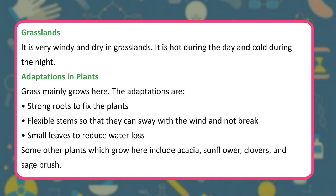Grasslands are very windy and dry, hot during the day and cold at night. Adaptations in plants: grass mainly grows here, with strong roots to fix the plant, flexible stems so they can sway with the wind without breaking, and small leaves to reduce water loss. Some other plants found here include acacia, sunflower, clovers, and sagebrush.